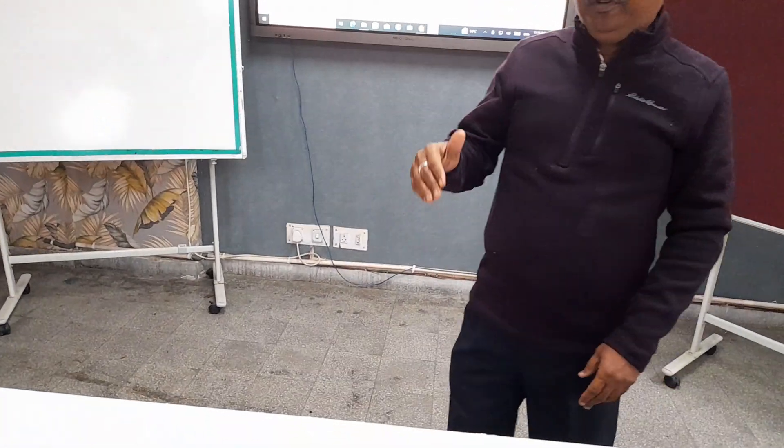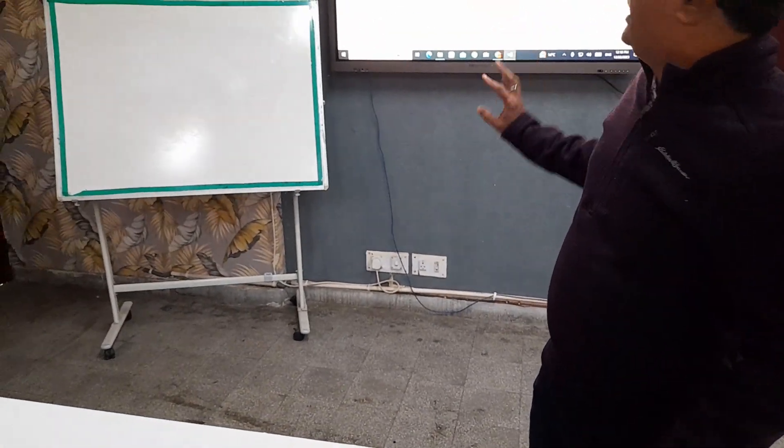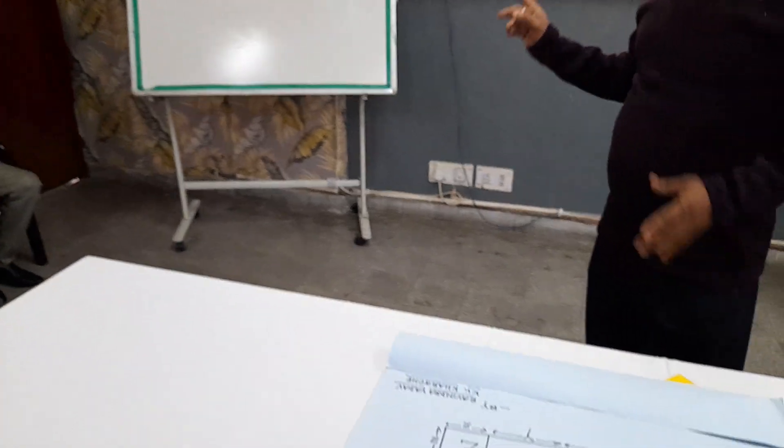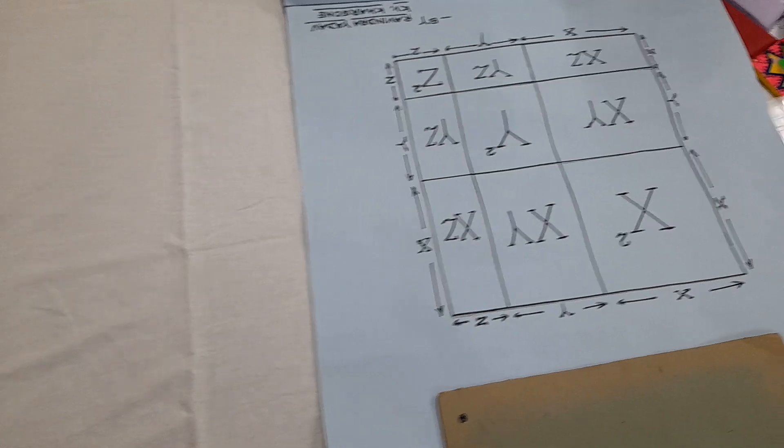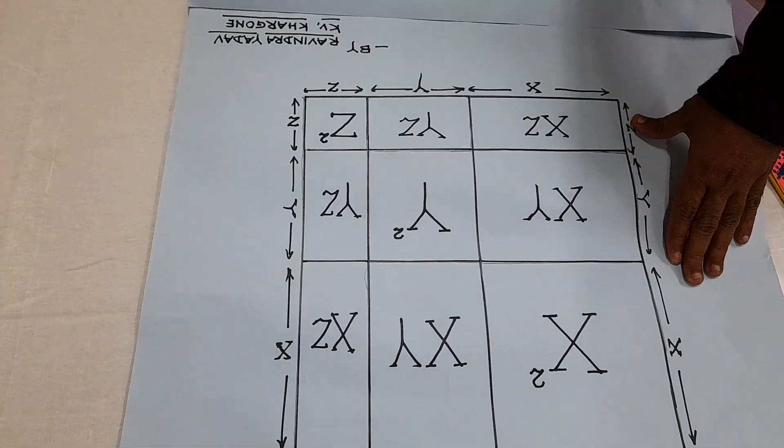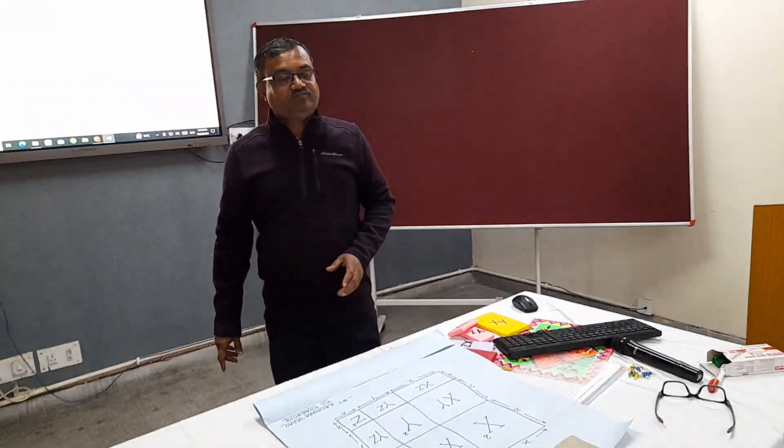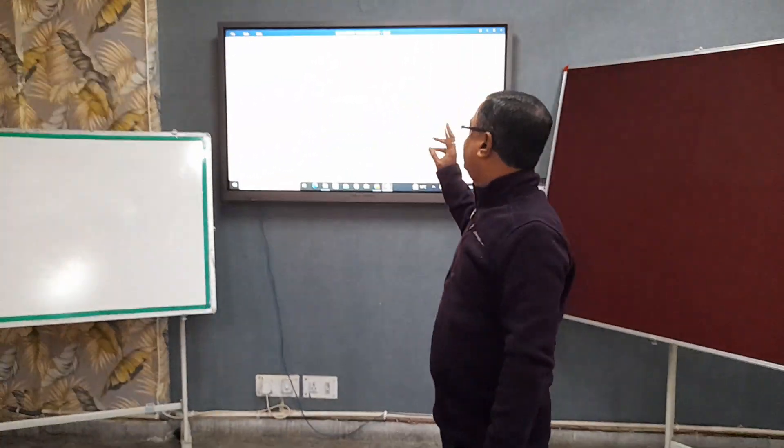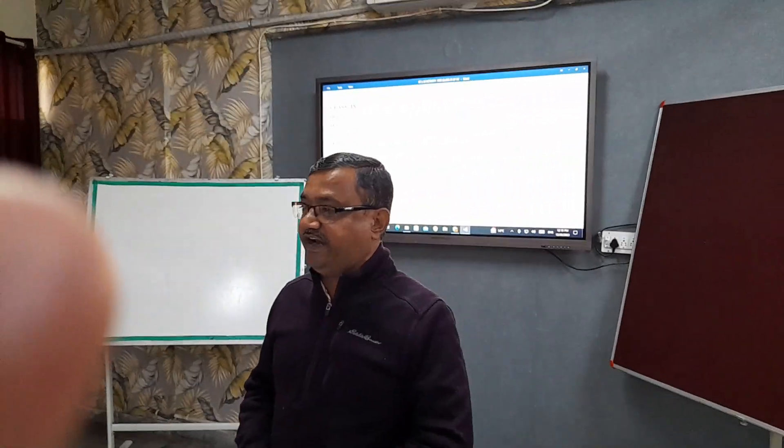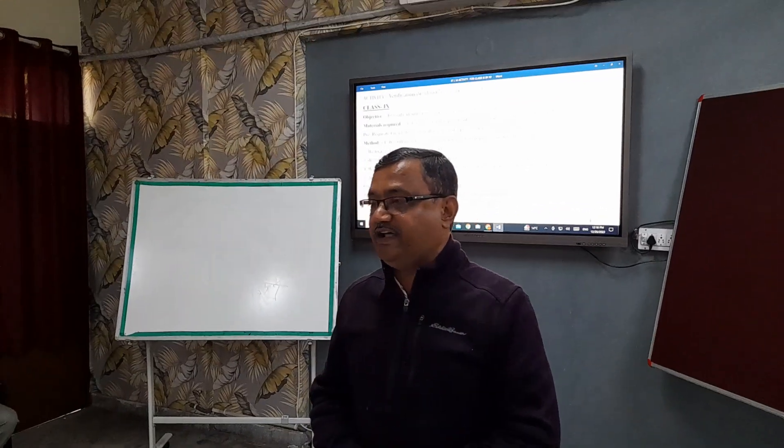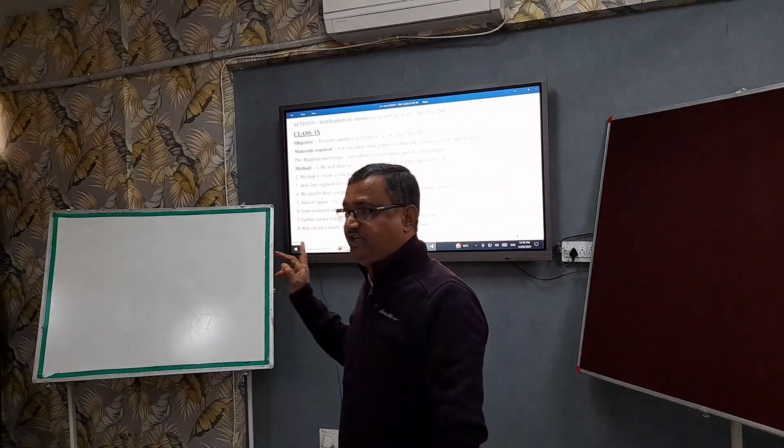Because we are doing it on plain paper, the formula used is x plus y plus z whole square. The area of a square is side squared, so we will draw a square of side x plus y plus z. For the other terms—xy, yz, and zx—we will use the area of a rectangle, which is length multiplied by breadth.